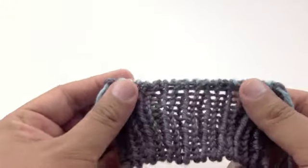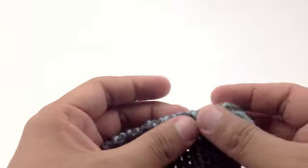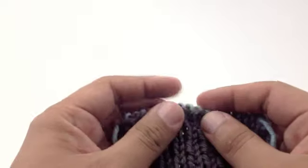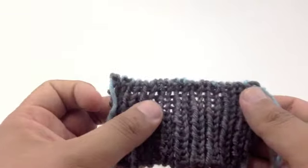It allows your edge to be nice and stretchy and doesn't hold it too tight like some other bind offs can. It's also sometimes referred to as the Kitchener Rib Bind Off.